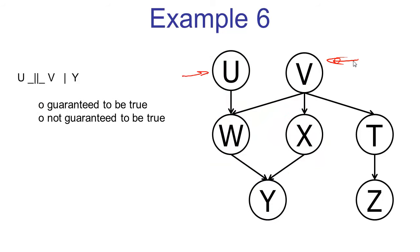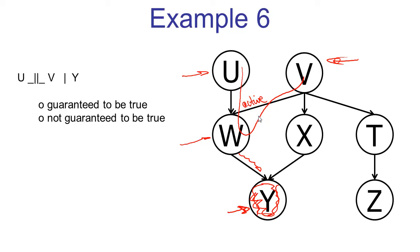We're again asked about u and v, and now y is observed. Let's check the first path, u, w, v. This path consists of just one triple — it's a v-structure. The middle node is unobserved. Its descendant y is observed. So we have an active v-structure. This v-structure is the only triple along this path, which means the entire path is active. Once we have found an active path, we know that we cannot guarantee the independence just by looking at the graph structure.